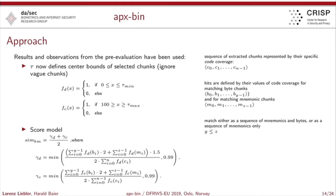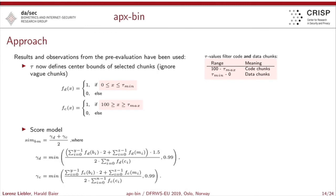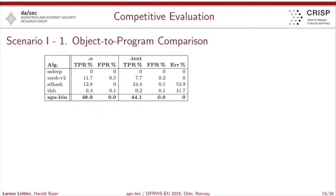We finally defined an approach where the most important aspect is the parameterization of the thresholds using tau max and tau min. We now define center bounds, meaning we only select very reliably identified code fragments or chunks we are very sure belong to data. With tau max and tau min we define chunk quality. If you set both to 50, you would again select all chunks.